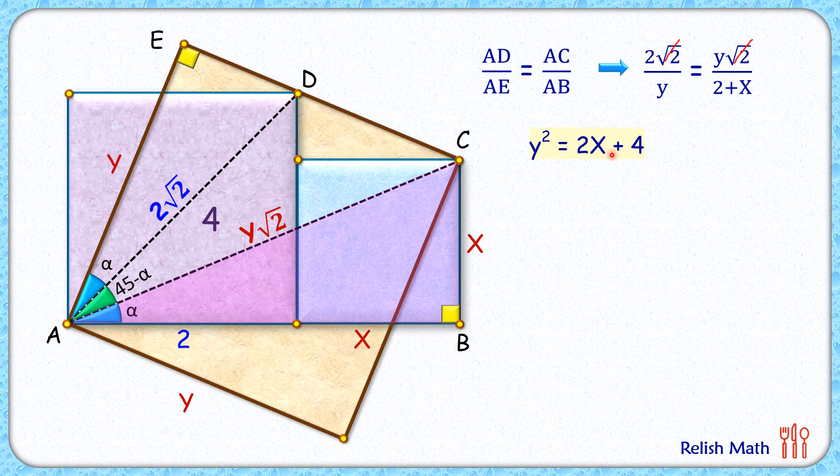Now let's look at triangle ABC. In this pink triangle, it's a right angle triangle. Applying Pythagorean theorem, we will get (2+x)² + x² = (y√2)².